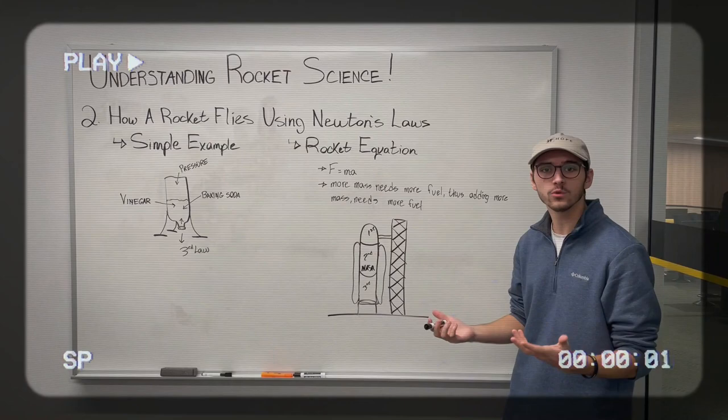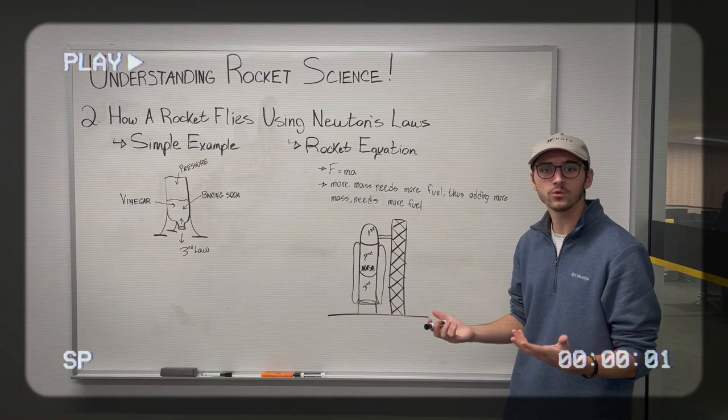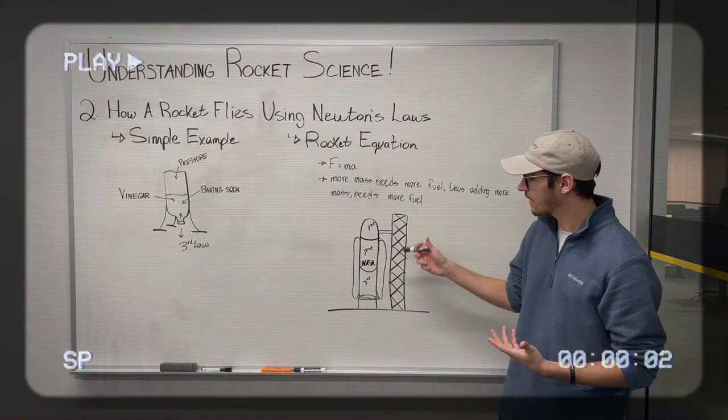What the rocket equation means is for a rocket to launch, you need fuel. And fuel adds mass. And the more mass you're adding, you need more fuel. And this is an endless cycle that means the more fuel you add, the more mass you have to move, meaning you need more fuel.